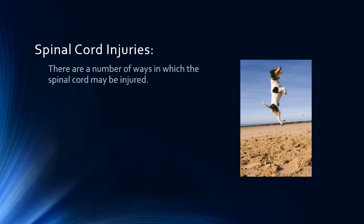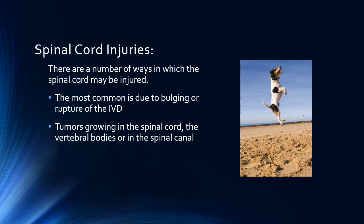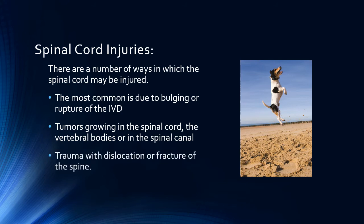There are three main ways in which the spinal cord can be injured. The most common is due to bulging or rupture of the intervertebral disc. Tumors can grow within the spinal cord or in the spinal canal or bones of the spinal column, and these tumors can crush adjacent nerves, leading to loss of function. Trauma to the spine can result in fracture or dislocation of the vertebra and subsequent loss of function.